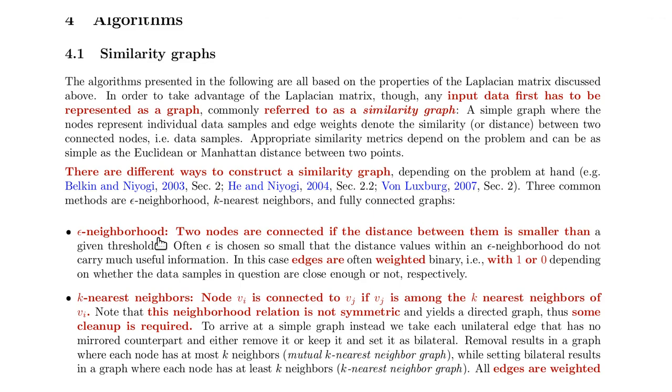Then you go through each pair of nodes or each pair of samples, and you calculate the similarity. In the epsilon-neighborhood graph, you would connect two nodes if their distance is smaller than epsilon.